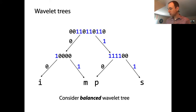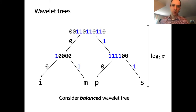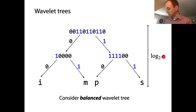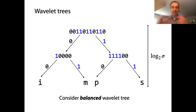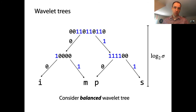Because it's a balanced tree, we know what to say. It's about log base two of the number of leaves, which is the number of characters in the alphabet, or small sigma. We can say that the height of this tree is log base two of sigma, the alphabet size. This is going to be a multiplicative factor in whatever queries we're going to be doing.